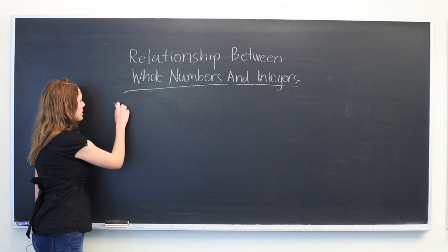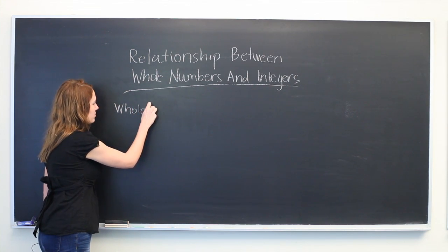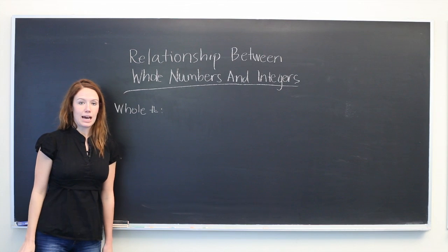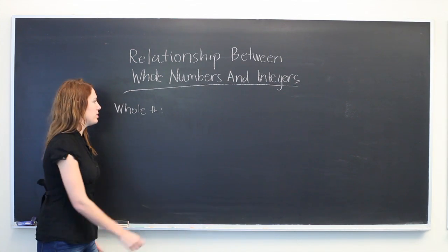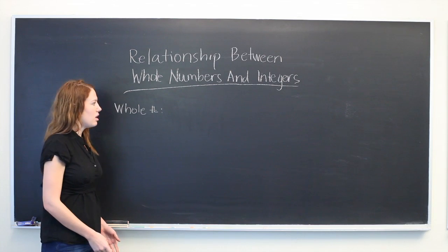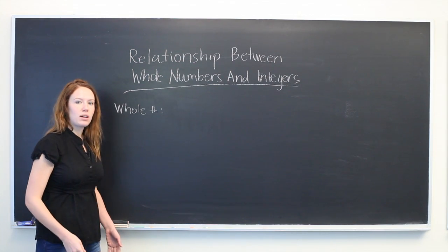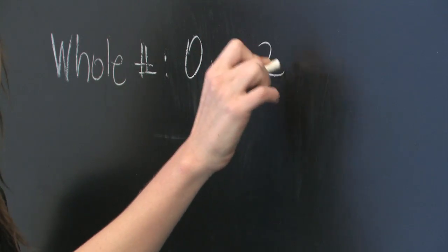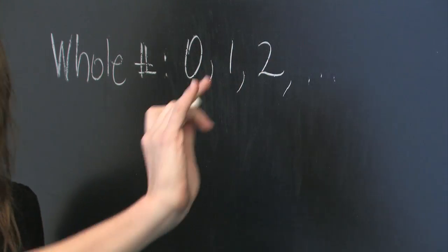Whole numbers are counting numbers: 1, 2, 3, and so on. So positive constants from 1 to infinity as well as 0. So 0, 1, 2, and so on.